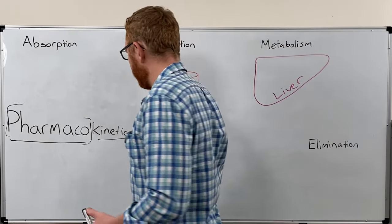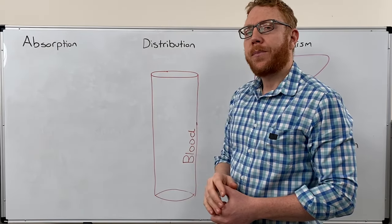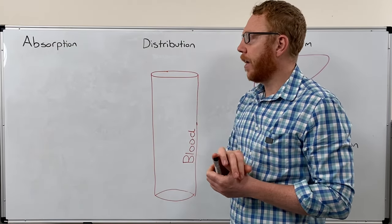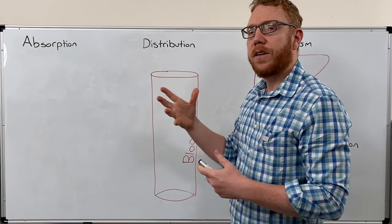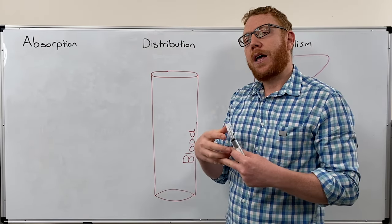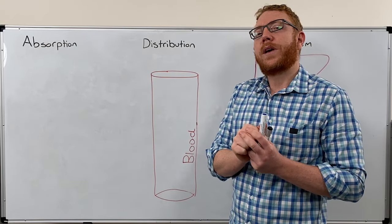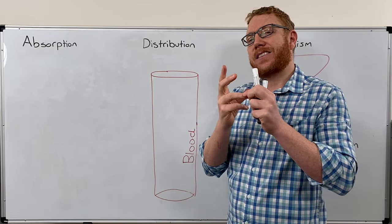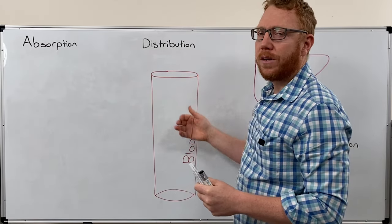Let's start with absorption. Absorption is the way that the drug is getting into the blood. There are many different ways we could administer drugs, but the first principle is the transportation methods to get into the blood. This takes us back to cellular biology and the different types of transport. We can have passive transport, facilitated transport, active transport, and lastly bulk transport or endocytosis. These are the four ways that drugs can be absorbed and move into the blood.